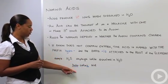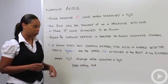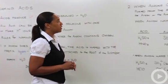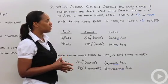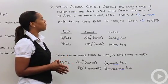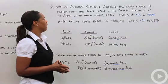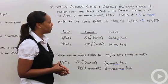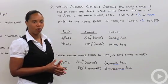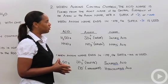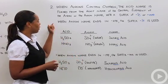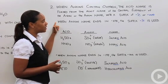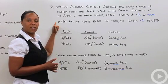The second rule is that when anions contain oxygen, the acid name is formed from the root of the central element of the anion or the anion name with the suffix -ic or -ous. Let's distinguish between whether you get -ic or -ous. When the anion name ends in -ate, you get the suffix -ic.